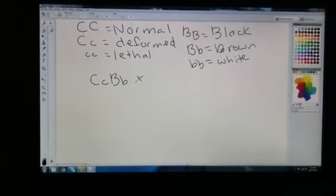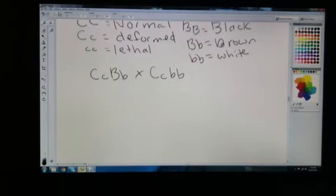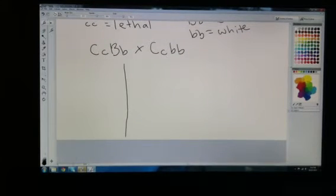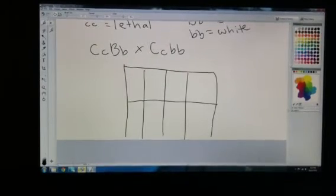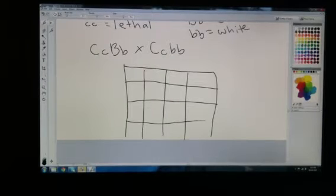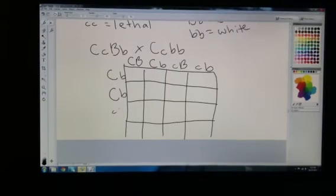So now your job is to do a dihybrid cross that shows us the possible offspring. We set up a dihybrid cross. I apologize for my misproportioned dihybrid cross. We take our possible gametes and fill them in along the top for one parent and then over on the side. Then we fill in our Punnett square.